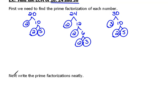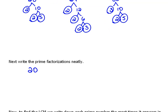Now after we have found the prime factorization, our next step says to write the prime factorization neatly. So what I mean by that is, let's write out 20 as being 2 times 2 times 5.